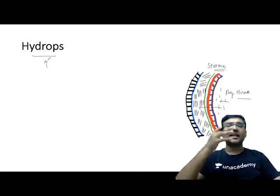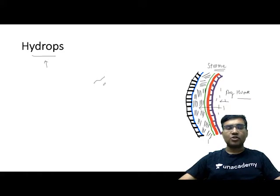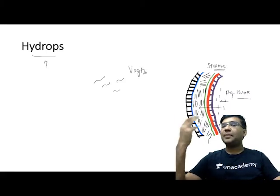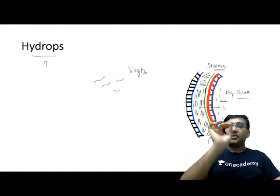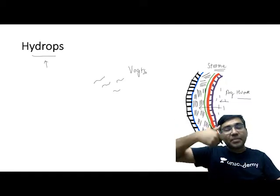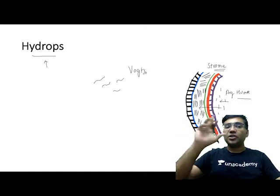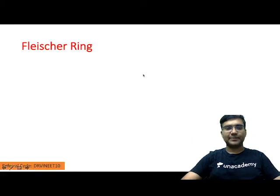Whenever there is hydrops, the patient has a very severe type of keratoconus, and hydrops can lead to scarring. A few striae can also be seen in keratoconus — these are called Vogt's striae. Do not confuse them with Haab's striae seen in congenital glaucoma. If you put pressure on the eyeball, Vogt's striae disappear. H goes with hydrops and V goes with Vogt's striae.